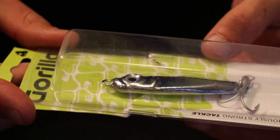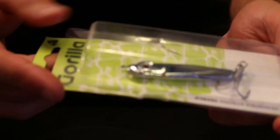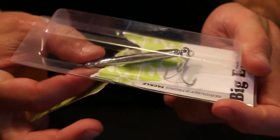This is a Gorilla slug, a metal which you'd use for spinning. You don't need a loop knot with this because it's going to be moved so fast through the top of the water with a high-speed retrieve.